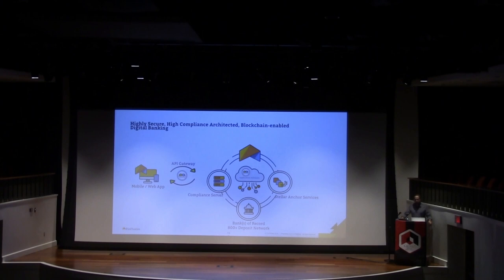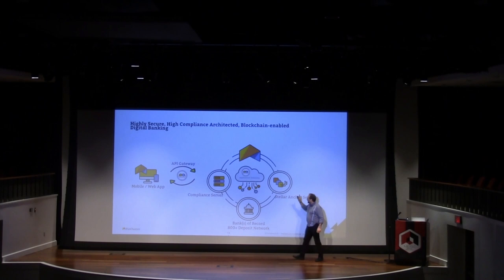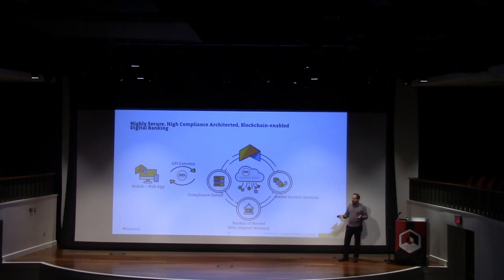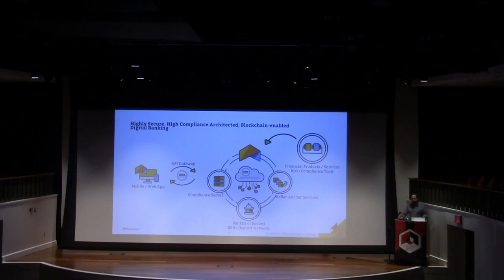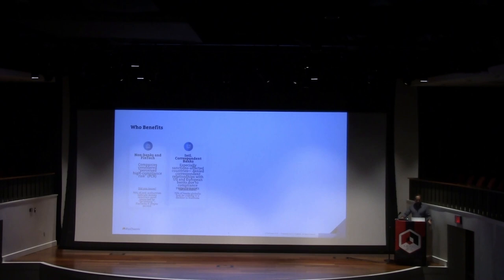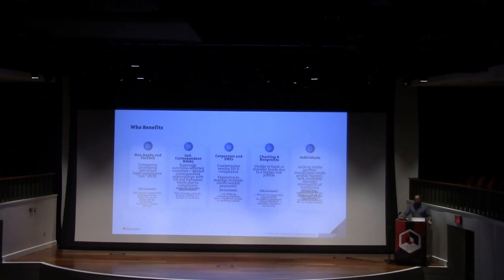You have mobile access. You have compliance servers. Then you overlay products, AI, and other things. These are all what a decentralized trust technology allows you to do. Who benefits? Non-banks and fintechs, correspondent banks — we'll stitch that network together again — corporates, small and medium enterprises, charity non-profits, and particularly individuals. That's the core aspect of where we're going.